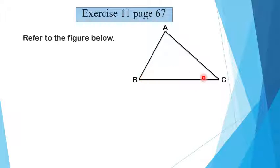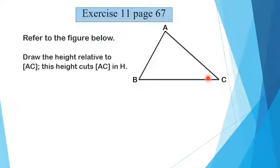We have to draw the height relative to AC. The height or the altitude or the orthogonal projection must be drawn perpendicular to AC from vertex B. Why? Since height, what do you mean by height? It's a segment issued from a vertex perpendicular to the opposite side. Here it's relative to AC, so it must be perpendicular to AC and issued from vertex B.